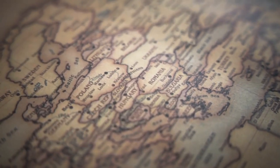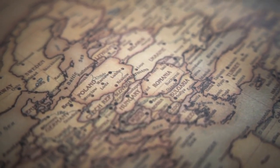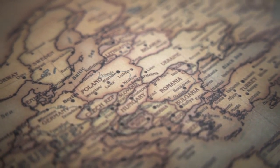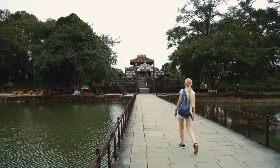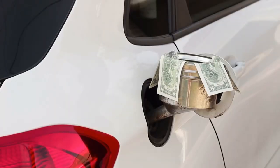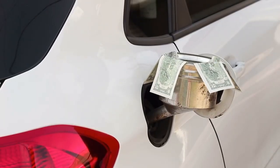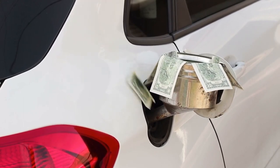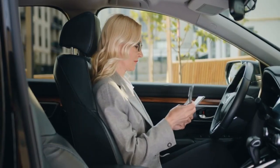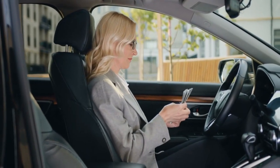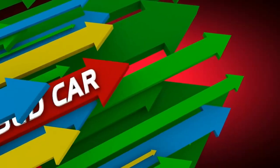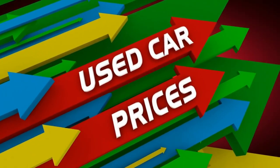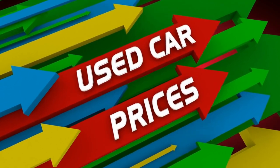The Ford Model T is considered a significant milestone in the industrial revolution and the automotive industry. In the early 20th century, automobiles were still considered a luxury for the wealthy. However, the invention of the Ford Model T and the mass production method resulted in lower automobile prices, making them accessible to the middle class. The use of the assembly line production method revolutionized the automotive industry and was also adopted in other industries.